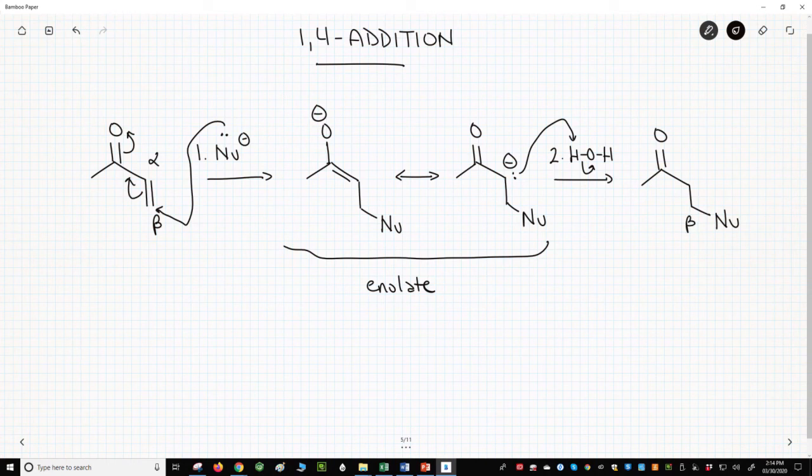Let's number the original ketone. If we look at the enolate intermediate, the nucleophile attacked at atom number 4 and electron density lands on atom number 1. For this reason, this addition is called a 1-4 addition.